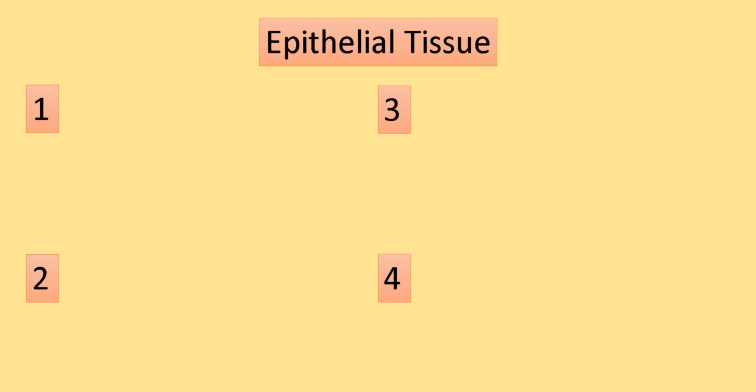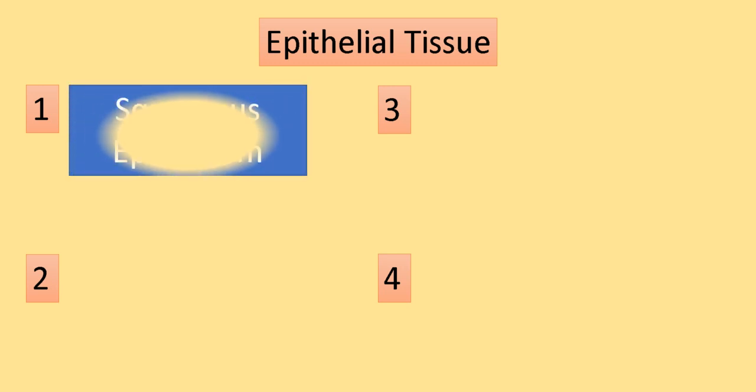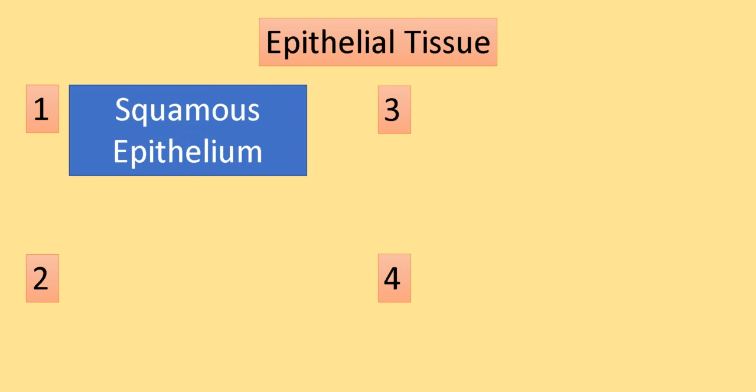The first subtype of epithelial tissue is squamous epithelial tissue. These are thin, flat, with prominent nuclei and are closely packed. Such tissues are found lining the mouth, nasal cavities, blood vessels, and lymph vessels.